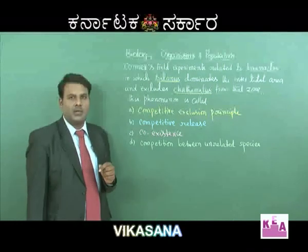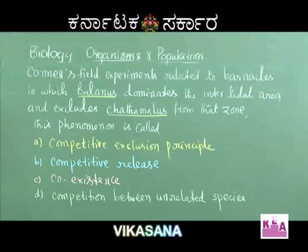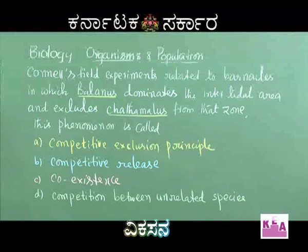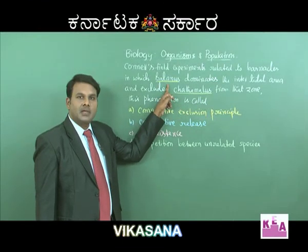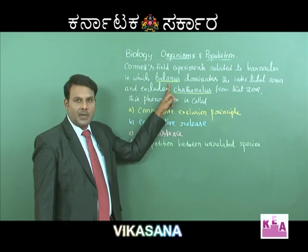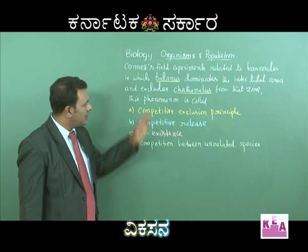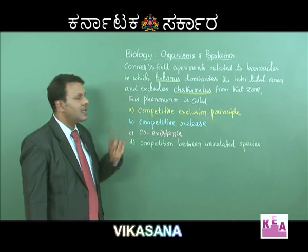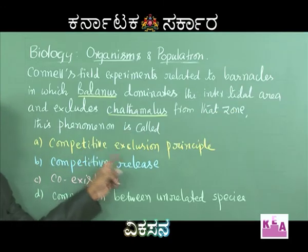Let us take a question from population interactions. Connell's field experiments on barnacles showed that Balanus dominates the intertidal area and excludes Chthamalus from that zone. The larger barnacles (Balanus) are the superior competitors and Chthamalus is the inferior competitor. Options: A — competitive exclusion principle; B — competitive release; C — coexistence; D — competition between unrelated species.